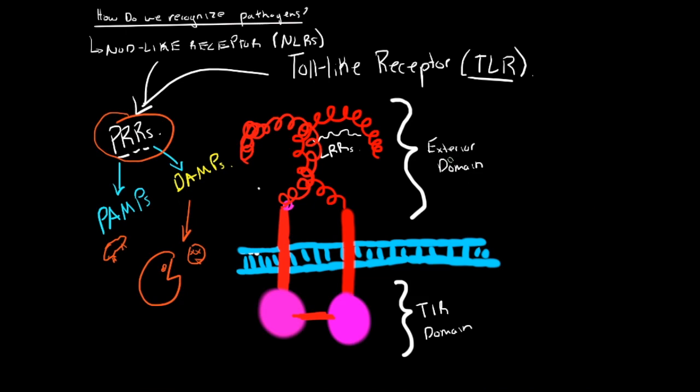These leucine-rich domains comprise the horseshoe-shaped extracellular and endosomal binding domain for TLR ligands. This is where ligands bind. The TIR domain, which stands for Toll interleukin-1 receptor domain, interacts with adapter molecules. I'll talk about the adapter molecules in my next video—how everything will adapt and how a signaling cascade comes after dimerization of these molecules.